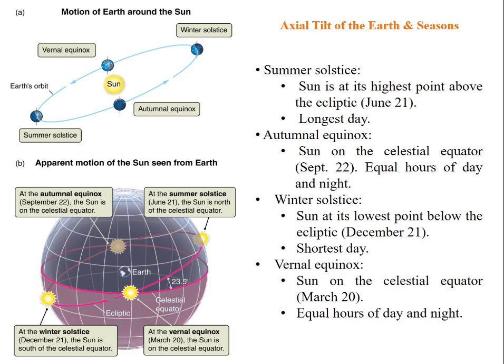Vernal equinox: the sun is on the celestial equator and we have equal hours of day and night. These days you can remember: June 21st, December 21st, September 22nd, and March 28th.